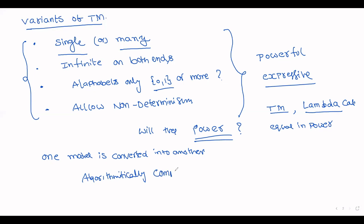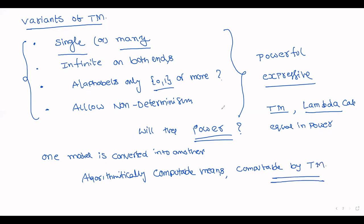Finally, algorithmically computable means anything that is computable by the Turing machine. These are the different variants of the Turing machine.